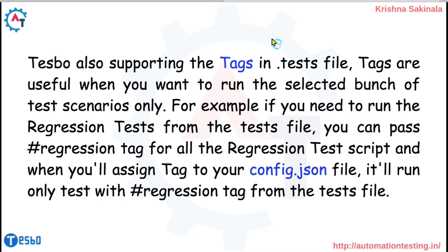Tesbo also supports tags in the .tests file. Tags are useful when you want to run only a selected bunch of test scenarios. For example, if you need to run regression tests from the test file, you can pass a #regression tag for all the regression test scripts, and assign that tag in your config.json file to run only those tests.